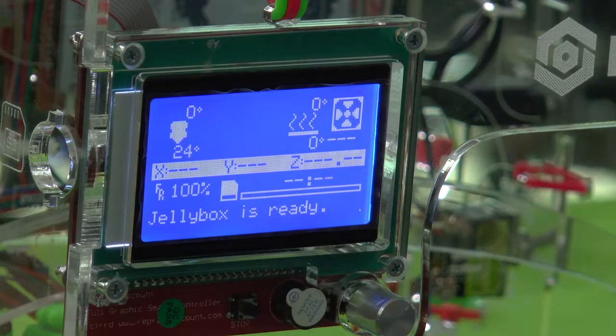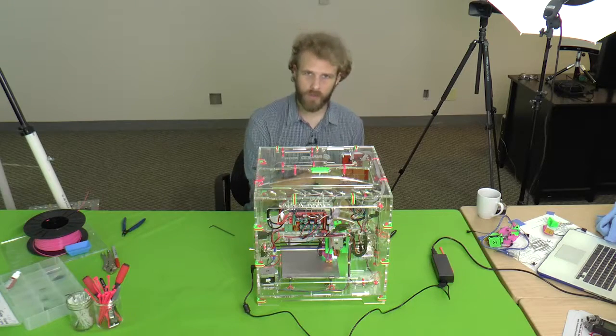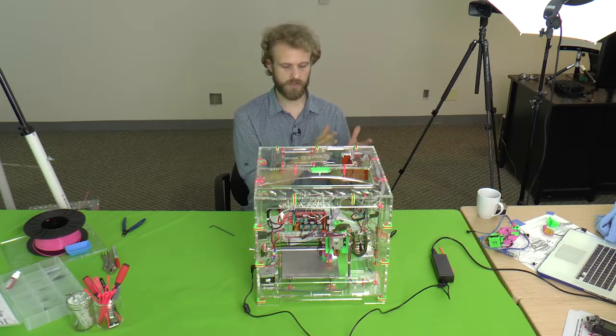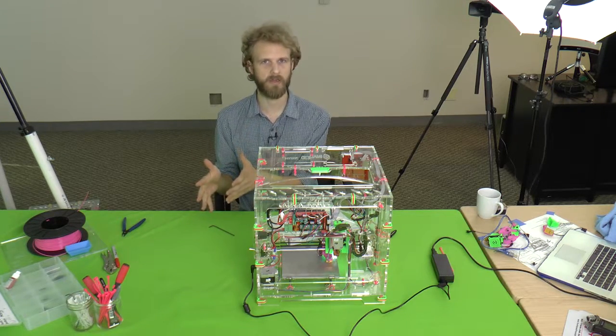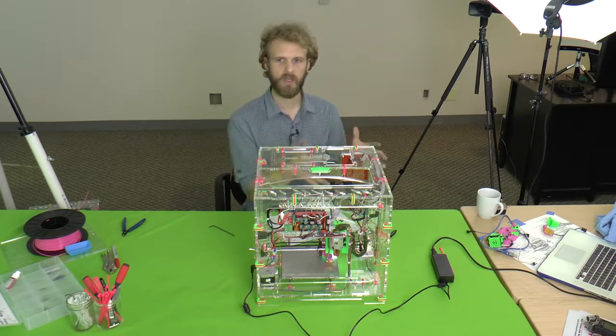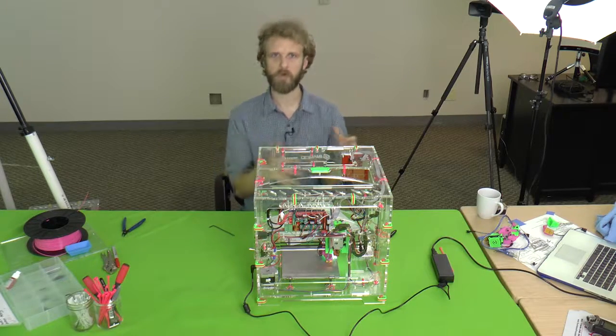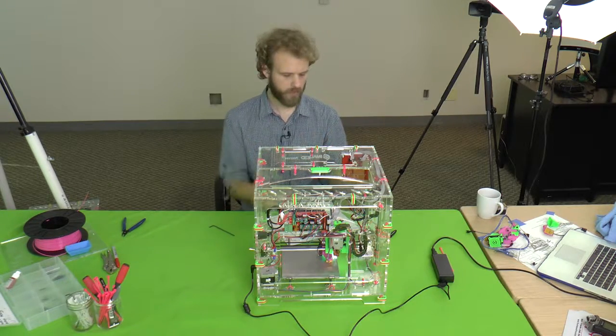If we didn't do that, there's a chance your proximity sensor would be trying to sense off the actual build plate because the homing offset affects all the motions of the printer. And we don't want to do that.